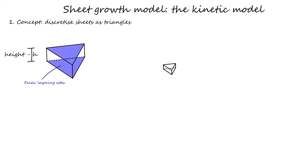The first important concept of the sheet growth model is the description of the sheets in space. This is a numerical necessity. Following a popular concept from computer graphics, the sheets are discretized as triangles. Since they have a height h, the triangles are actually triangular prisms. The side length is L. These can take arbitrary orientation in space.